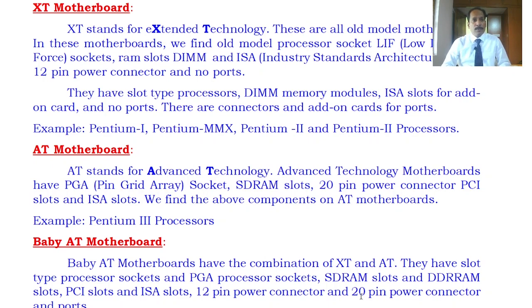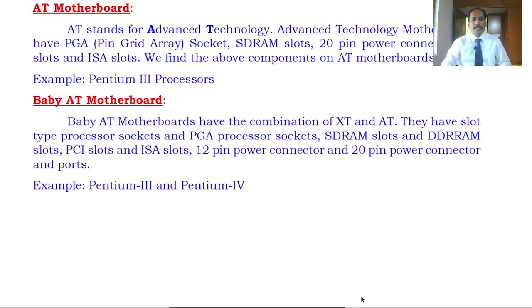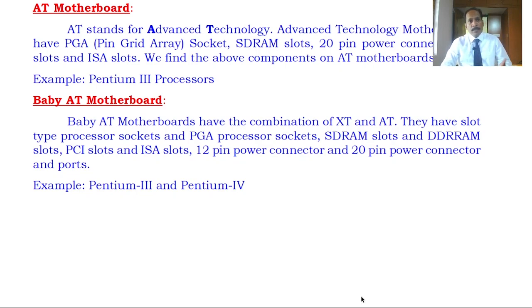Next we have the Baby AT motherboard. It is an improvement of the AT motherboard — a combination of XT and AT. It has a slot-type PGA — Pin Grid Array — processor socket and supports both SD RAM and DDR RAM. It supports both 12-pin and 20-pin power connectors, and it also supports ports, which earlier motherboards did not. The Pentium 3 and Pentium 4 processors are used with the Baby AT motherboard.